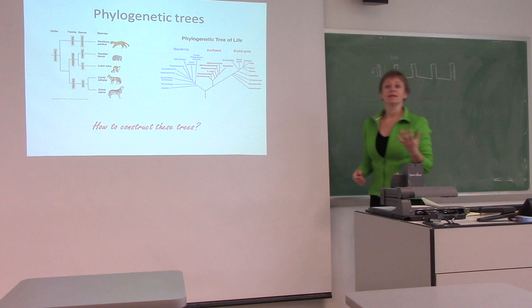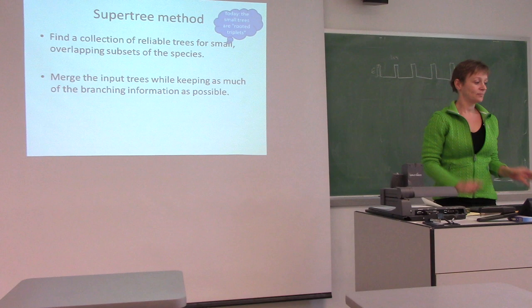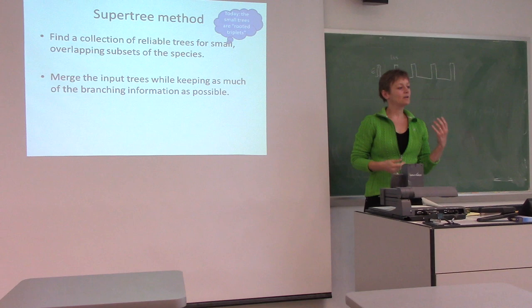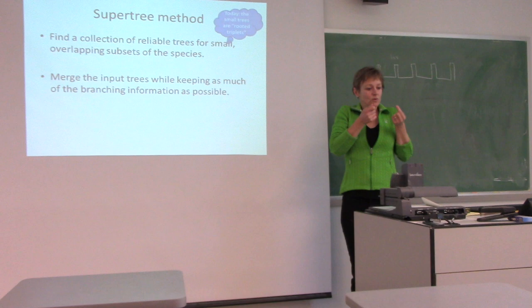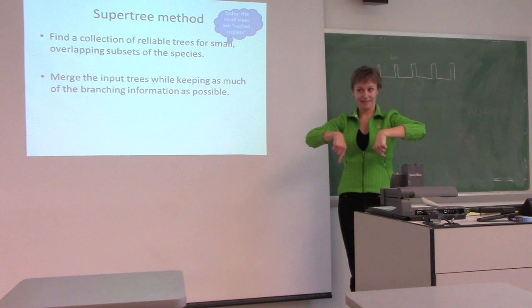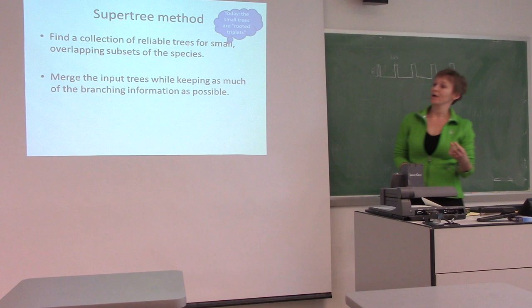What I'm interested in is: how do we construct these trees? There's one way that biologists use called the super tree method. The idea is that first you find a collection of reliable trees for small overlapping subsets of the species, then you merge those input trees while keeping as much of the branching information as possible.